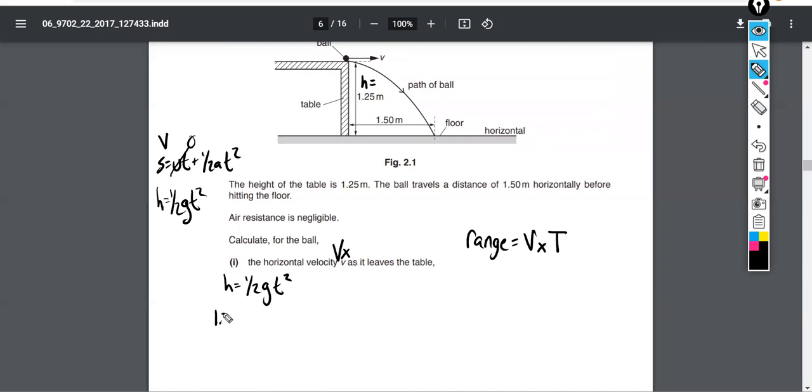So we can substitute in 1.25 meters for height equals one-half 9.81 for g, and then solve for t. Once you do that, you get t is about half a second, 0.5048 seconds, which we'll then plug in over here.